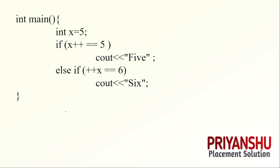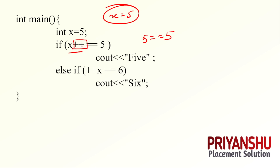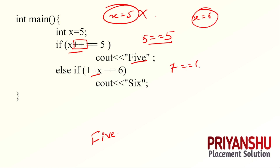This question is about the increment-decrement operator. We have x equal to 5. Due to post-increment, the rule is: first take the value, then update. In pre-increment the rule is: first update, then take. So here, we take 5 first, then update. Since 5 == 5, the condition is true and 5 is printed. After that, ++x is pre-increment: first update the value, then take. So it will only print 5.